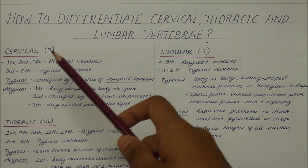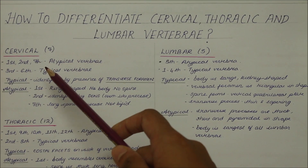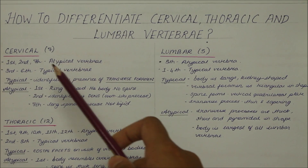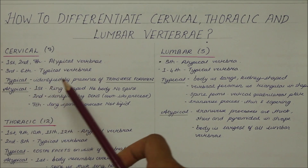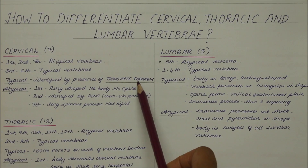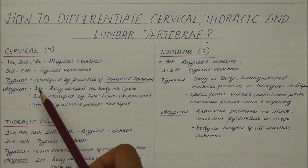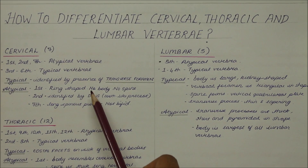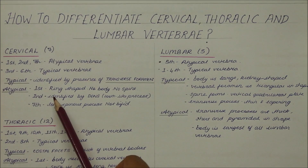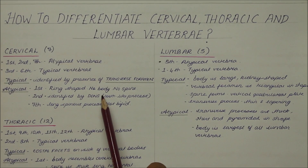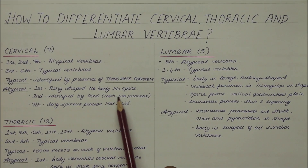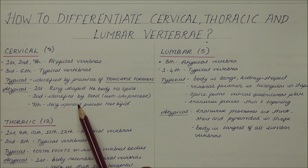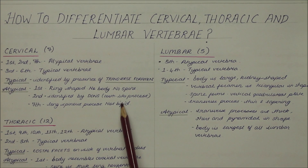In summary: there are 7 cervical vertebrae; the first, second, and seventh are atypical while the third to sixth are typical. The typical vertebra is identified by the transverse foramen. The atlas is ring-shaped with no body and no spine; the axis is identified by the dens or odontoid process; and the seventh has a long, non-bifid spinous process.